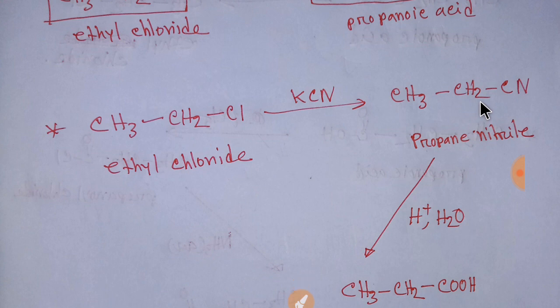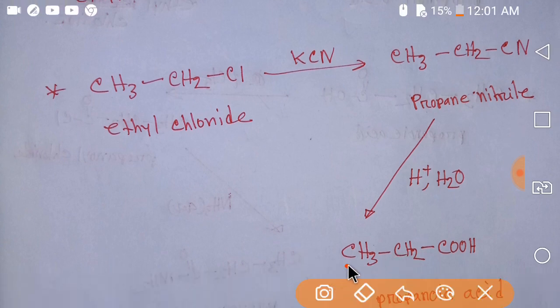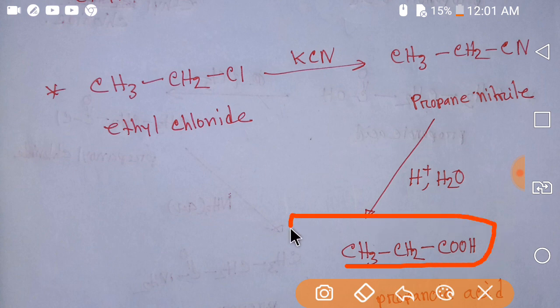In propanenitrile there is one more carbon in the chain than ethyl chloride. If you hydrolyze this propanenitrile using aqueous HCl, you will get propanoic acid. This is propanoic acid.